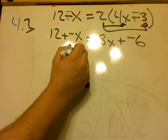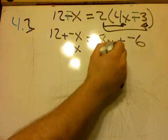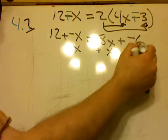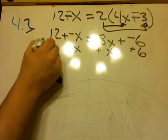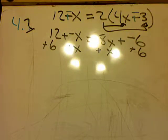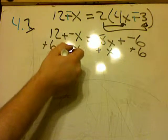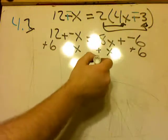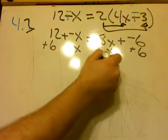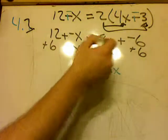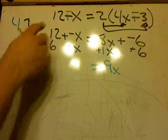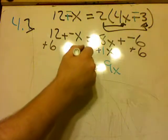So I'm going to add x to both sides, and I'm going to add 6 to both sides. So over here the x's cancel, over here the 6's cancel. So I've got 9x, right, because there's always a 1 in front of that x, equals 18.